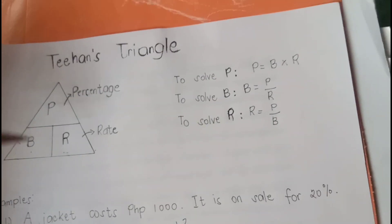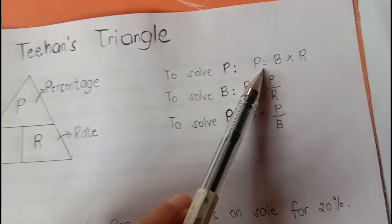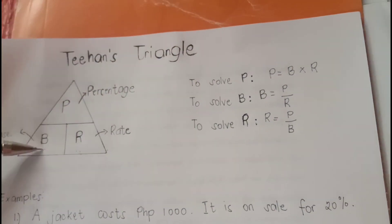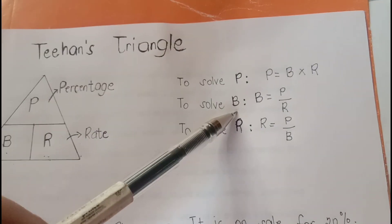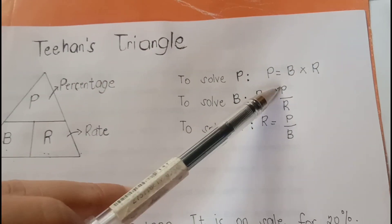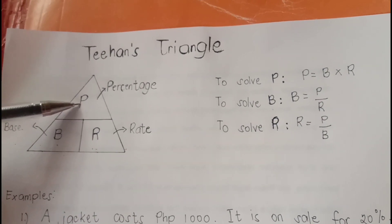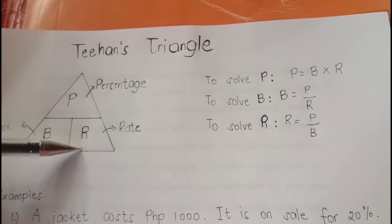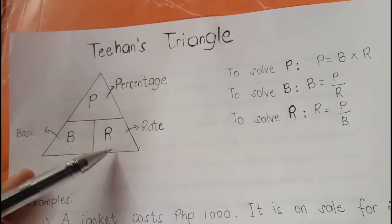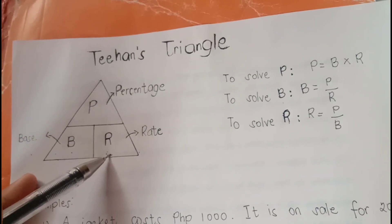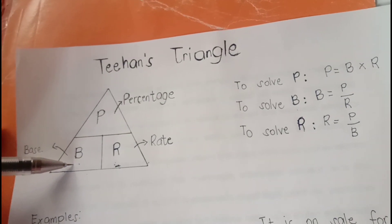How to get the percentage? Percentage is the base times the rate. How about the base? Base is equal to P over R, or P divided by R. And solving the rate — we have the percentage over the base.